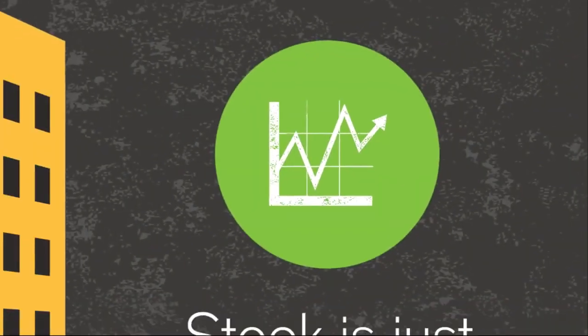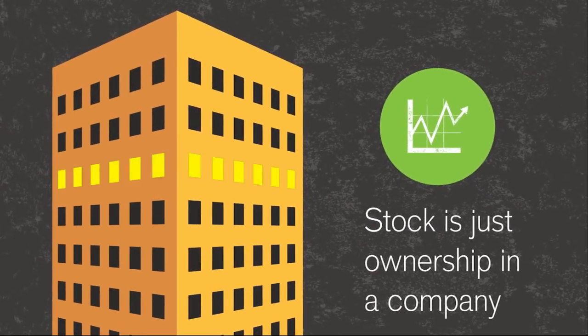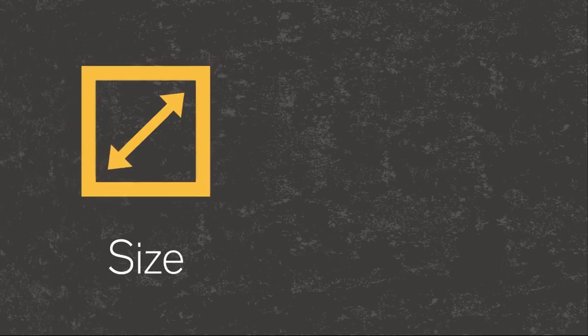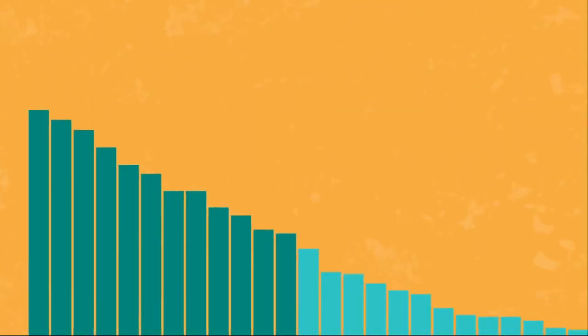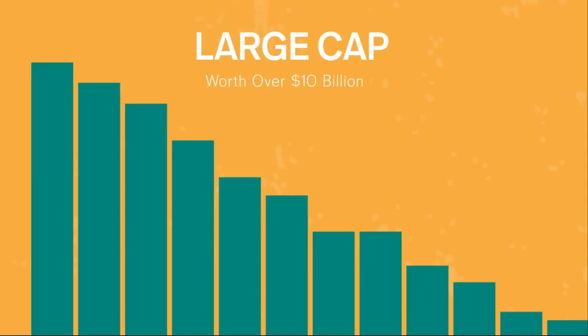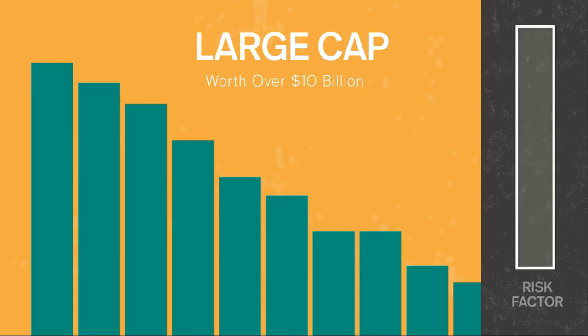Stock is just ownership in a company. There are many ways to classify stock. Two major ones are size, called market capitalization or cap, and company location. Each classification has its own typical level of risk. Large cap stocks include the 500 biggest companies in the US: Apple, Walmart, Disney, Ford, McDonald's. Ever heard of the S&P 500 or blue chips? Same thing. Keep in mind, all stock is risky, but these are generally considered the least risky.